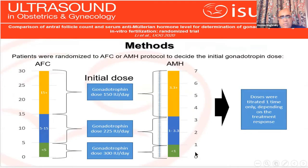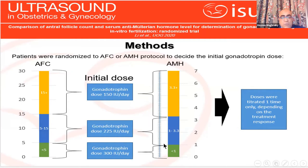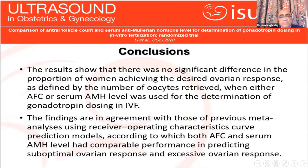As regards the fact that the follicles were not seen, we had to depend on AMH. There are papers that showed AMH can be divided into three categories which determine the gonadotropin dose used. If AMH was more than 3.3, the dose used was 150. If it is from 1 to 3.3, the dose was 225. Results showed that both AMH and antral follicle count have the same impact on dose determination.